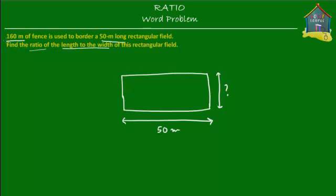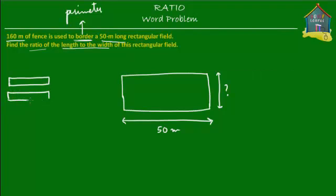Another number given to us is 160 meters, and this is how much fence is used to border this rectangular field. Now what is understood by 'border'? In technical terms, we call it the perimeter. So the border, which is the same as the perimeter, is 2 times the length.